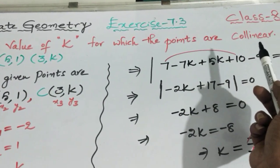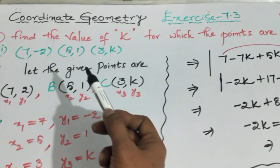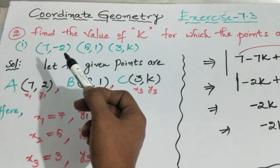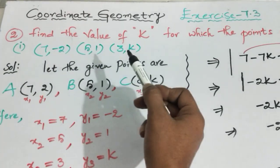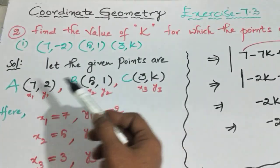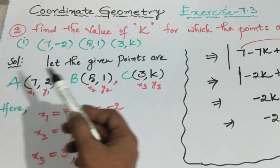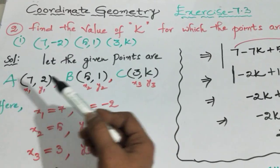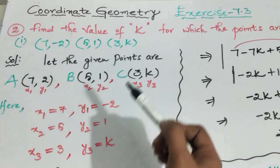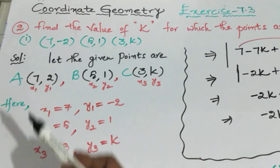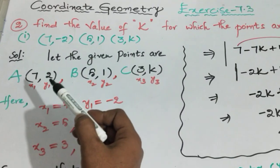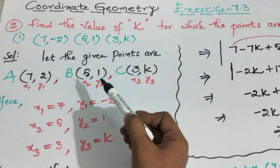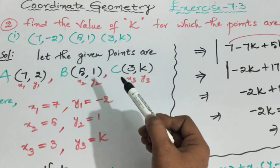The collinear concept is very easy. The question gives points: A is (7, -2), B is (5, 1), and C is (3, K). Let the given points be capital A, capital B, and capital C. So capital A is (7, -2), capital B is (5, 1), and capital C is (3, K).